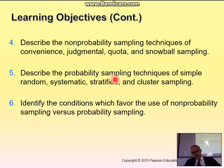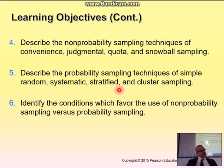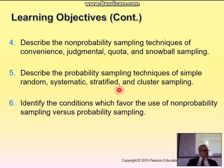Stratified sampling is done based on groups. For example, in Yemen there are five governorates, and each has a different number of customers. You do a pro-rata allocation — if Sanaa has three million, you take 30; if Taiz has two million, you take 20; if Aden has two million, you take two. So you take something that represents the geographical distribution.